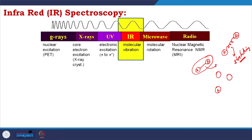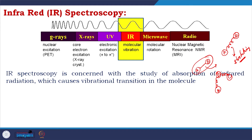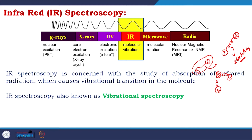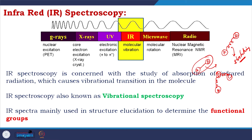If you have three atoms connected with springs, you look at the bending — that is where infrared spectroscopy works. IR spectroscopy is concerned with the study of absorption of infrared radiation which causes vibrational transitions in the molecule. It is also known as vibrational spectroscopy. IR spectra are mainly used in structure elucidation to determine the functional groups.